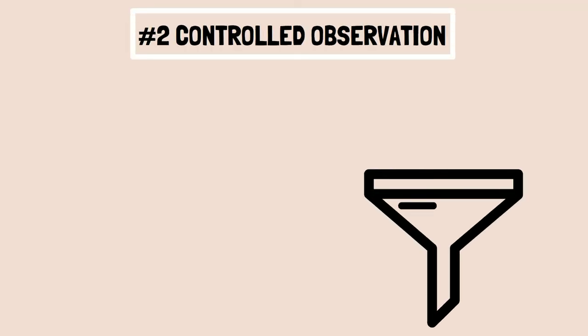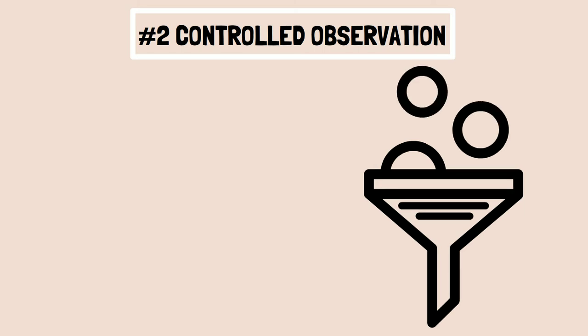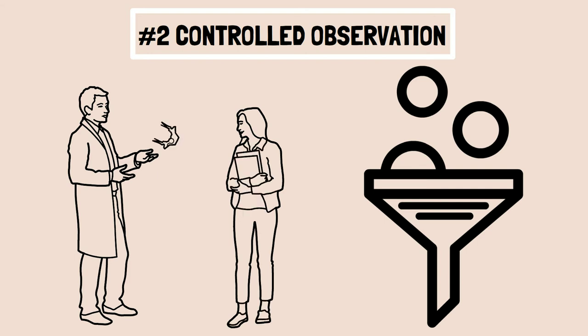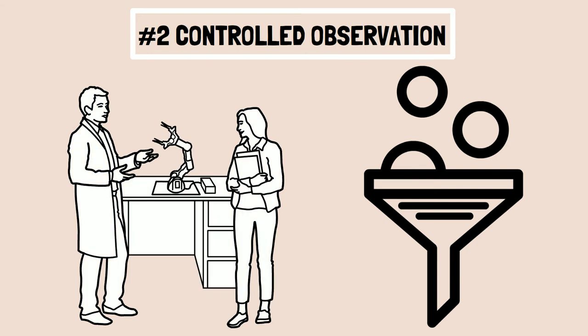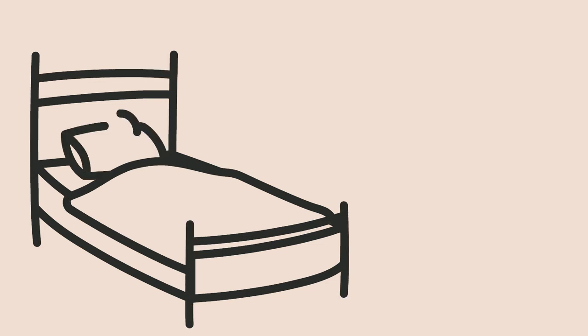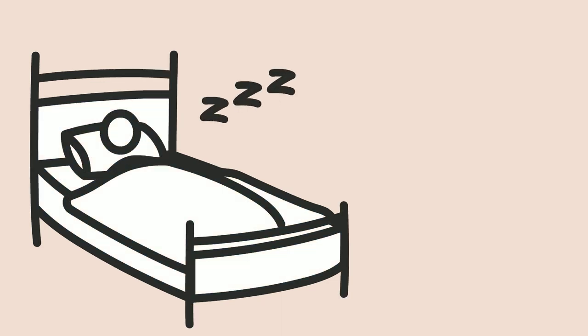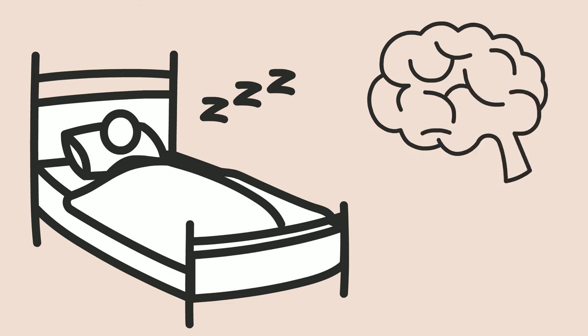2. Controlled Observation: Many times, you may need to control certain factors that determine behavior as they are not the focus of your study. For this reason, many of the studies in psychology are conducted in the laboratory. This type of observation is therefore called Controlled Laboratory Observation. For example, research has been carried out in sleep laboratories where electrodes are attached to the scalp of participants and changes in electrical activities in the brain during sleep are observed. Such an observation can only be done in a laboratory.